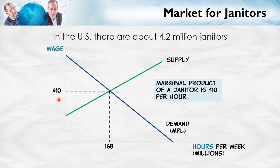In the United States, the wage for janitors is about $10 an hour, and the quantity supplied is about 168 million hours per week. Overall, there are about 4.2 million janitors in the United States. The key here is that we can use our tools of demand and supply to understand the labor market — predicting what will happen with increased demand, reduced supply, or other factors which influence labor markets.